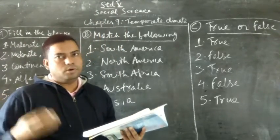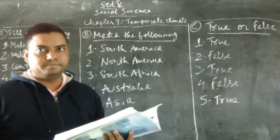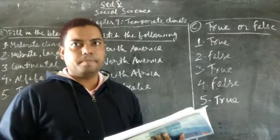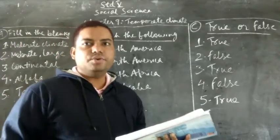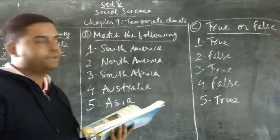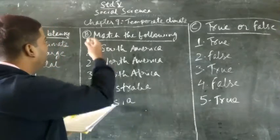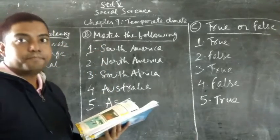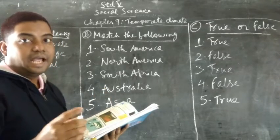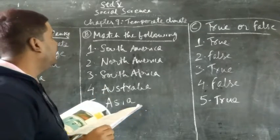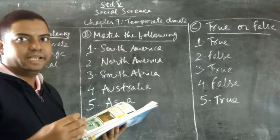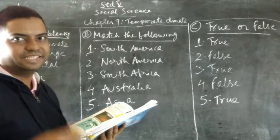A very good morning to all my dear children. Welcome to Sir Michael's e-learning classes. My name is Francis Sir. Today we will solve the question answers, fill in the blanks, etc. of chapter number 9 of social science for standard 5. The name of chapter number 9 is Temperate Climate. So let's begin solving the question answers, fill in the blanks, etc.